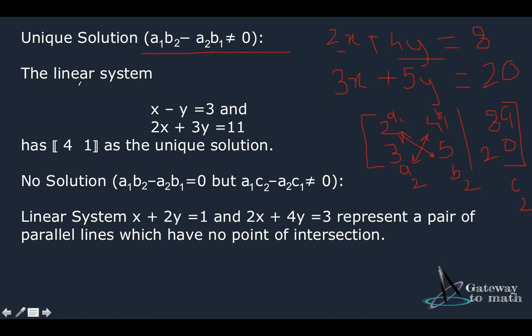Now let's take this example. We have x minus y equals 3, 2x plus 3y equals 11. So if I was to make the matrix out of this one, this becomes 1 minus 1, this is 3, this is 2, this is 3, this is 11. Now the condition is a1, b2. So 1 multiplied by 3 minus 2 multiplied by minus 1. The total is 5. It's a positive number and hence it's not equivalent to 0 and hence this has a unique solution. So right away we figured it out.